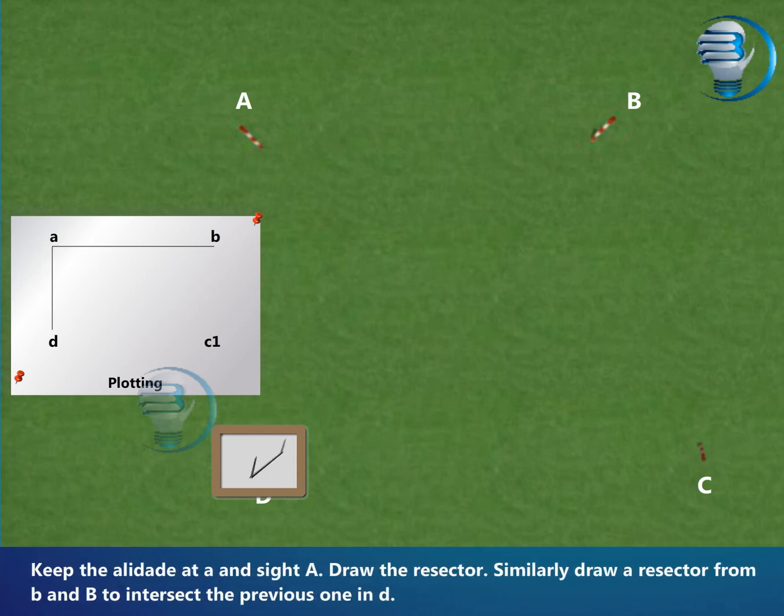Keep the alidate at a and site A. Draw the resector. Similarly, draw a resector from b to B to intersect the previous one at d.